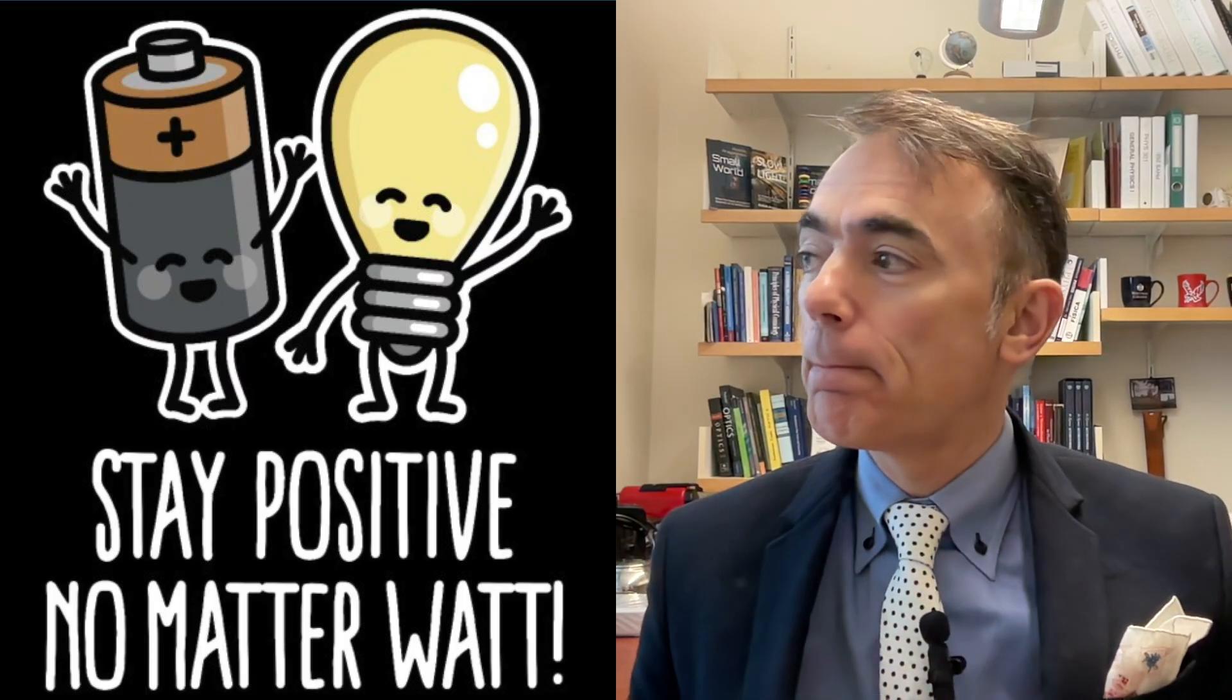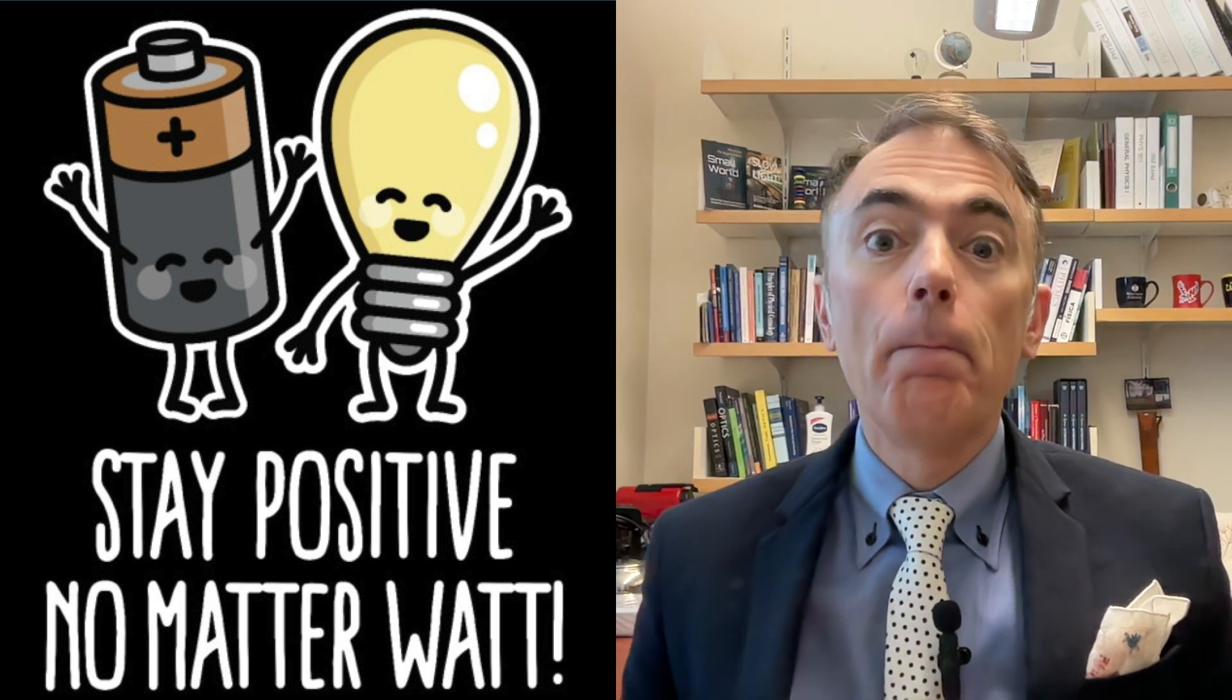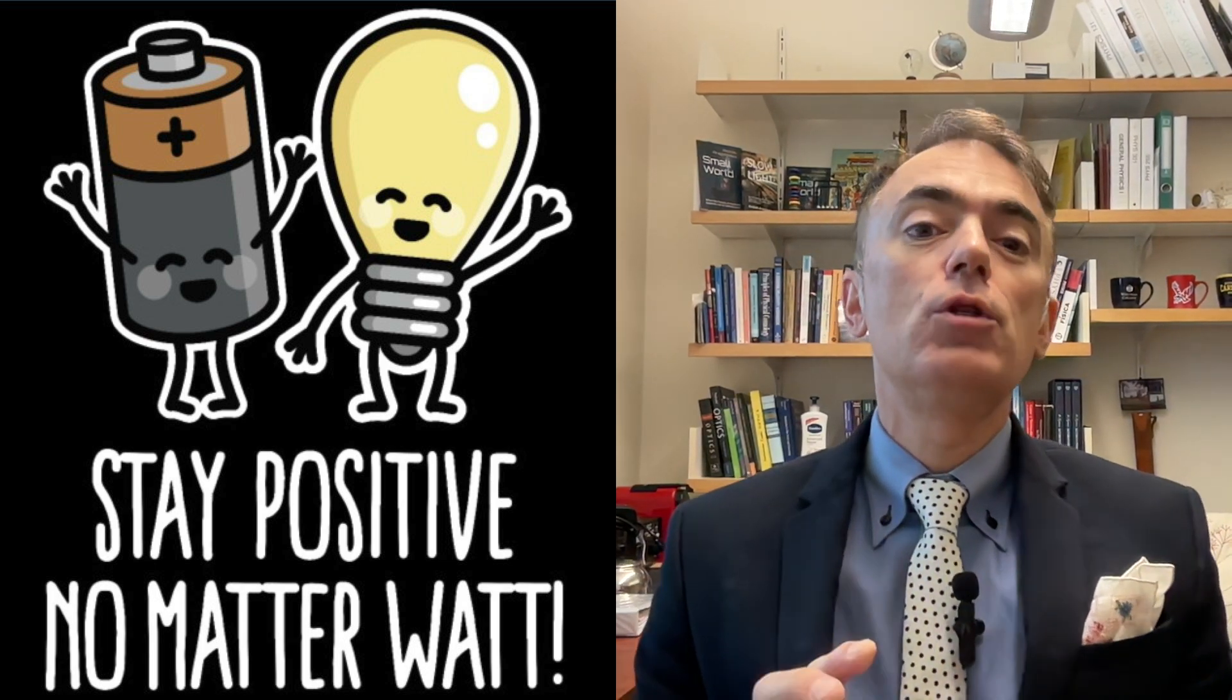By the way, why did the light bulb break up with the battery? Because it found the relationship too one-sided. There just wasn't enough energy to power things.